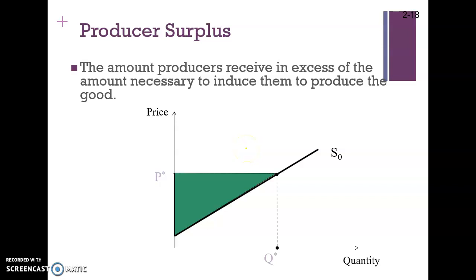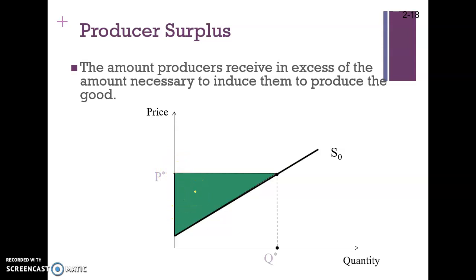The concept of producer surplus is equal to profit, which is the difference between total revenue and total cost. We can describe this concept with the help of the supply curve. Each point on the supply curve represents the cost of production, and the difference between the cost of production and the price represents the area of producer surplus. The more the area, the more the producer surplus; less area means less producer surplus.